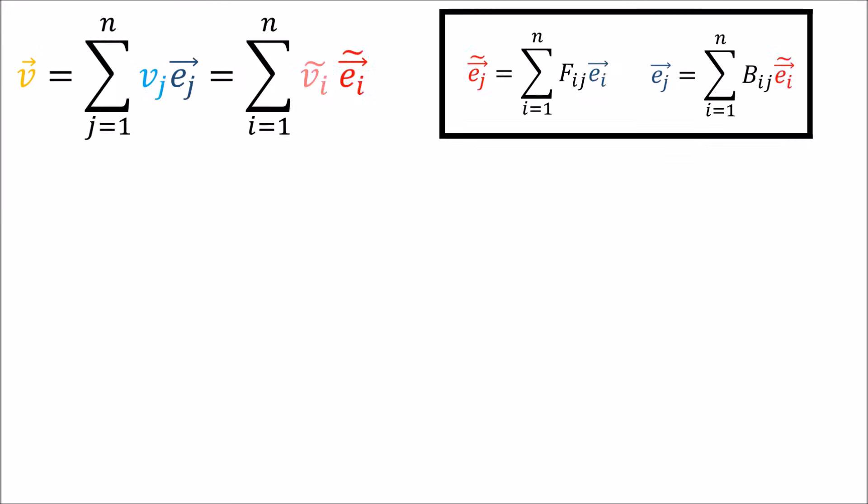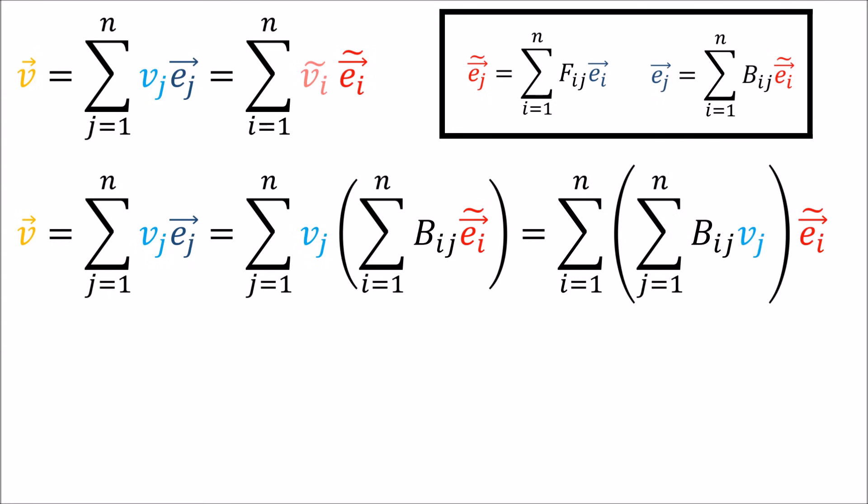Alright, so both of these summations are equal to V. Now let's bring out our forward and backward transformations here. So if we take the old basis and old components, what we can do is we can use the backward transformation to replace the old basis vectors with the new basis vectors. And so we get that, and rearranging the summations, we get this. So now we have V written as a summation of the new basis vectors.